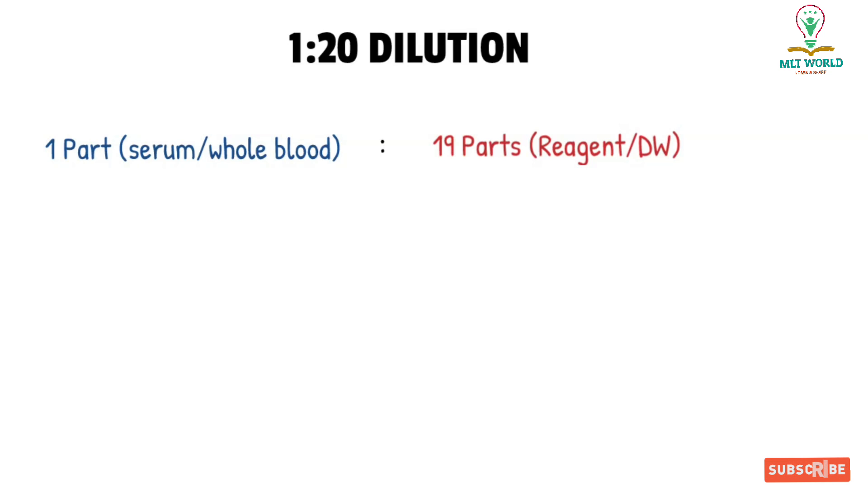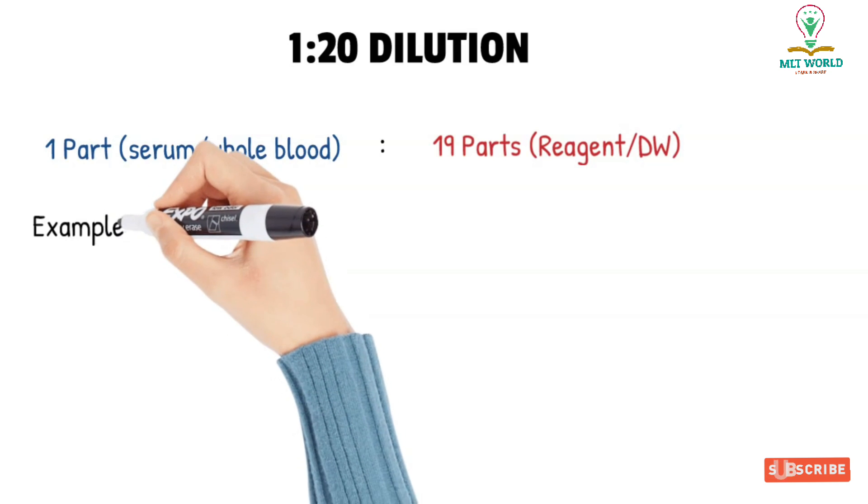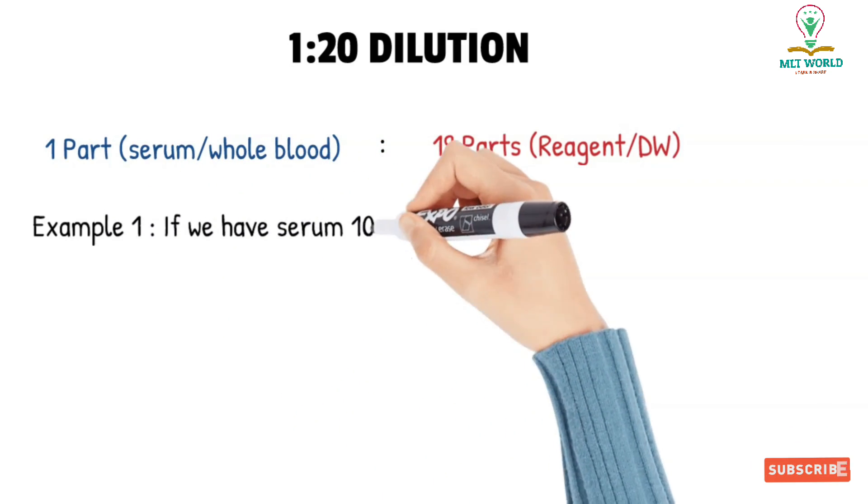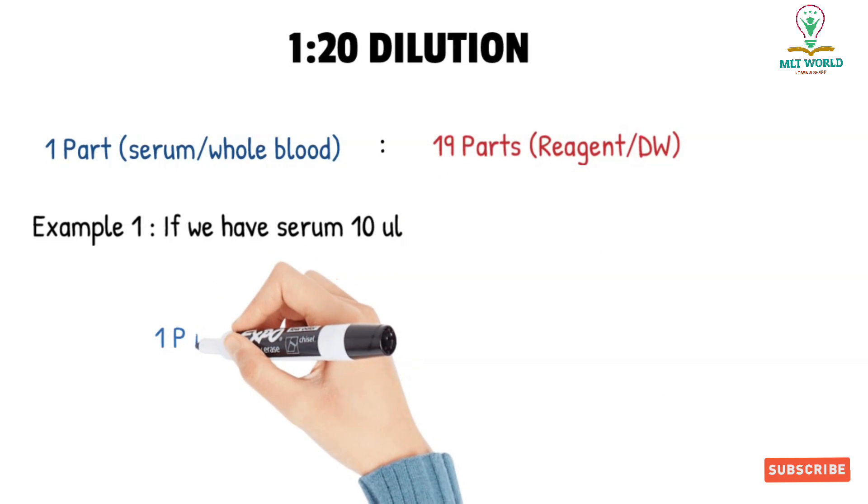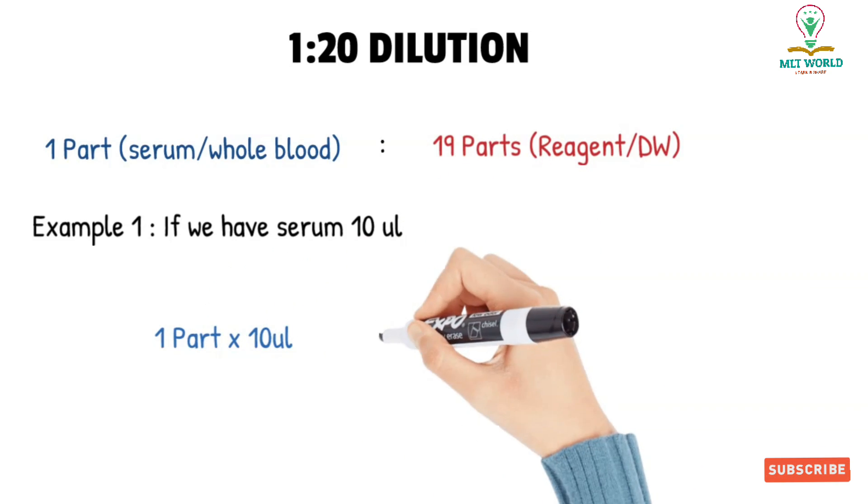As in our laboratory, mostly these two things are needed, so I will explain by giving examples. For example, if we have the serum 10 microliter, now you focus on the unit also and the amount also.